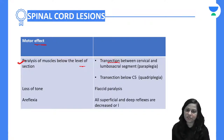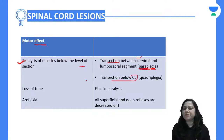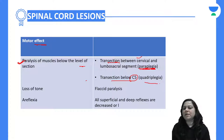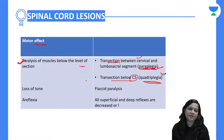Whenever the transaction is between the cervical and lumbosacral segments, there will be paraplegia — two limbs paralyzed. If the transaction is below C5, there will be quadriplegia — all four limbs will be paralyzed. There will be loss of muscle tone and flaccid paralysis.